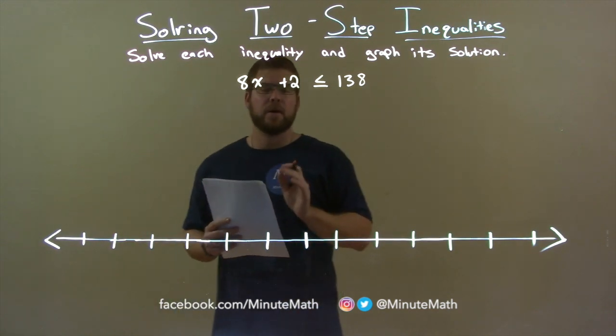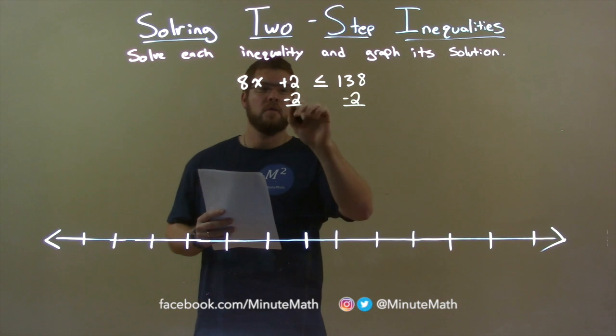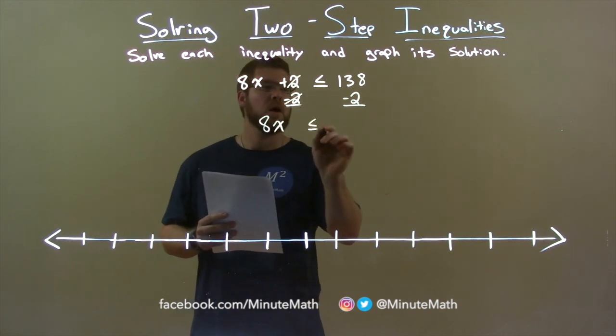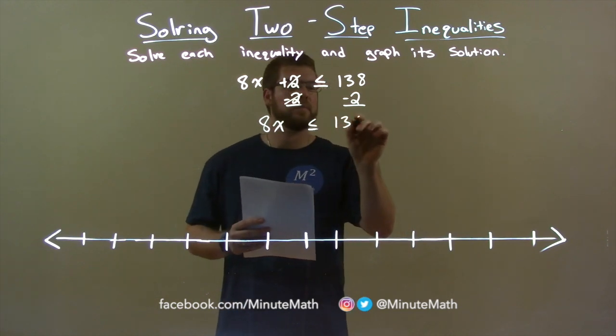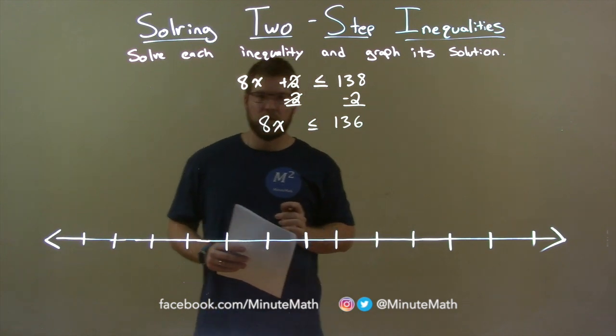Well, what I want to do here, first thing is I subtract 2 from both sides. The 2's cancel on the left, giving me 8x by itself. On the right, 138 minus 2 is 136. So now I have 8x is less than or equal to 136.